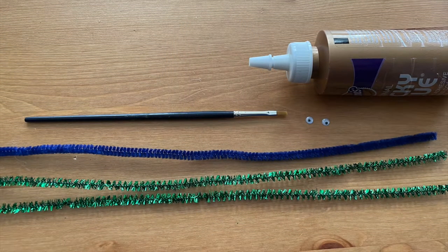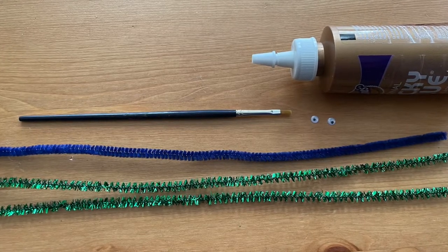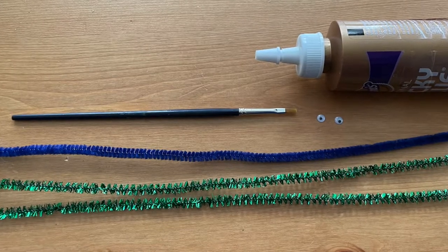These sparkling dragonflies are simple to make with pipe cleaners, so let me show you how. For this project you'll need one dark colored pipe cleaner, two metallic pipe cleaners, googly eyes, thick white craft glue, and a paintbrush with a thin tapered handle.